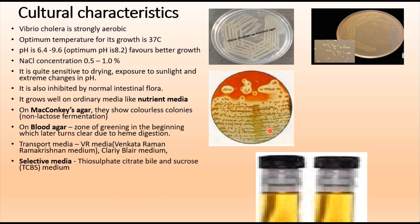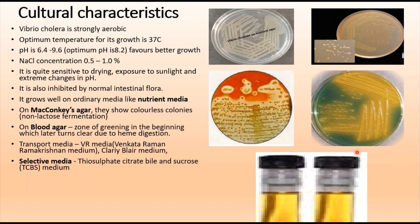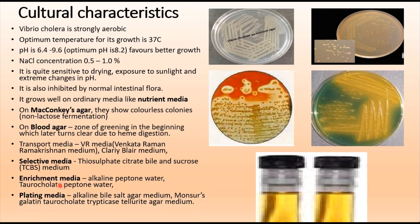The best selective medium for Vibrio cholerae is TCBS medium — Thiosulfate Citrate Bile Sucrose medium. This medium is green in color, and Vibrio cholerae produces characteristic colonies after incubation. Enrichment media include alkaline peptone water and taurocholate peptone water. Plating media include alkaline bile salt agar and Monsur's gelatin taurocholate tryptcase tellurite agar. These are the main media used to culture Vibrio cholerae.